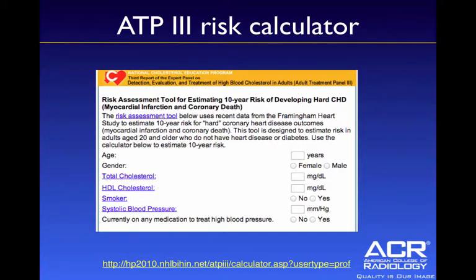The ATP3 risk calculator can be found online — one version is on the NIH website. You fill in the patient's age, gender, cholesterol, whether they're a smoker, systolic blood pressure, and whether they're on blood pressure medications. Based on this information, it will tell you which of the three risk categories the patient falls into.